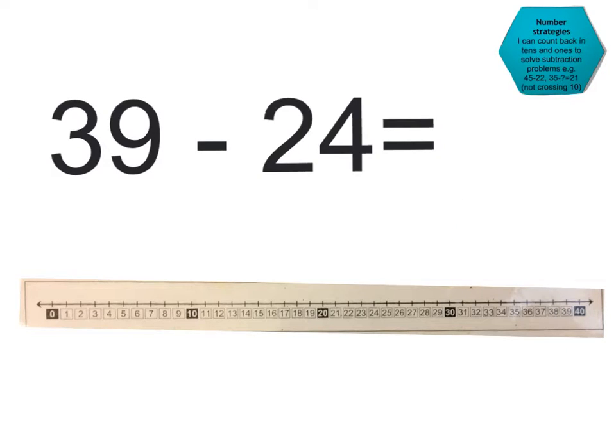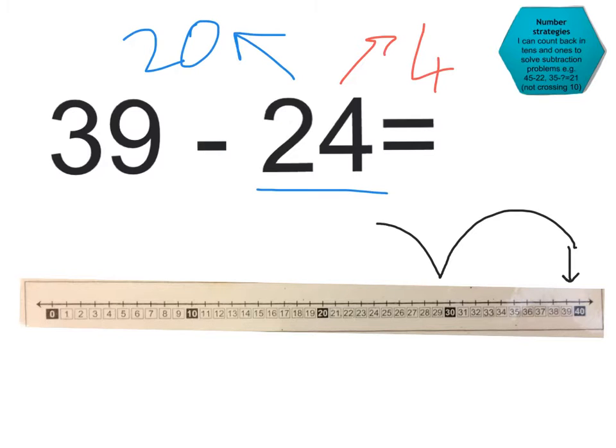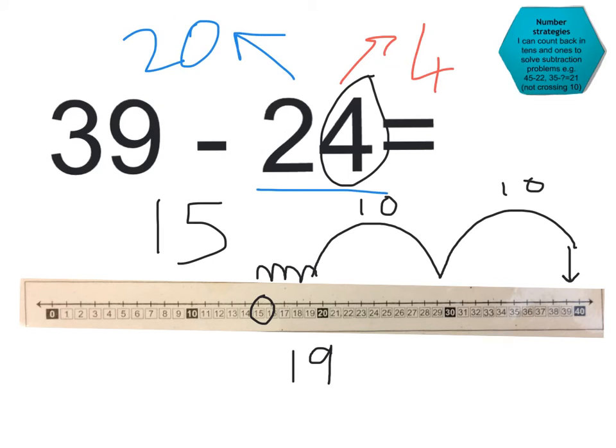And I can also show 39 take away 24 on a number line. So what I want to do first is split this number 24 into 20 and 4 1s. So I'm going to start at 39, and I'm going to jump back 10 to 29, and then another 10 to 19. So that's my 10 jump and my other 10 jump to make 20. And then I'm going to, so I'm at 19 at the moment. And then my next number, I'm going to subtract 4. So 19, 18, 1, 17, 2, 16, 3, 15, 4. So I arrive at 15. So that's another way of subtracting or counting back in 10s and 1s to solve subtraction problems.